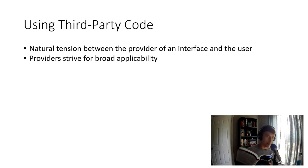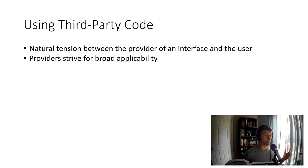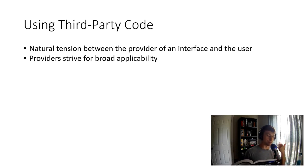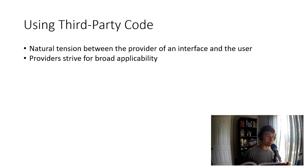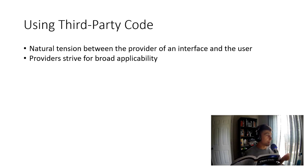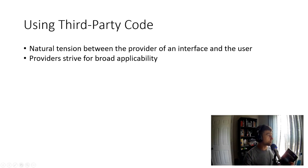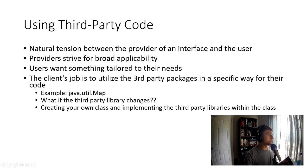Uncle Bob starts off the chapter by talking about using third-party code. This is essentially the libraries that other developers write and maintain so that you can import that third-party code into your classes — from a Java perspective — and utilize it for your own use. Stuff like from the Java util package: maps, lists — classes and interfaces that other people maintain that you can utilize in your own code. Uncle Bob says there's a natural tension between the provider of an interface and the user of the interface. Providers strive for broad applicability, and users want something tailored specifically to their needs.